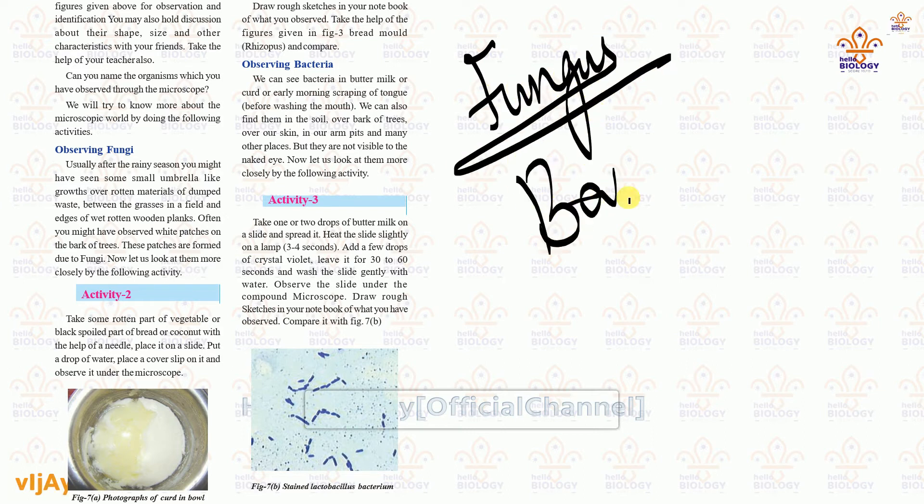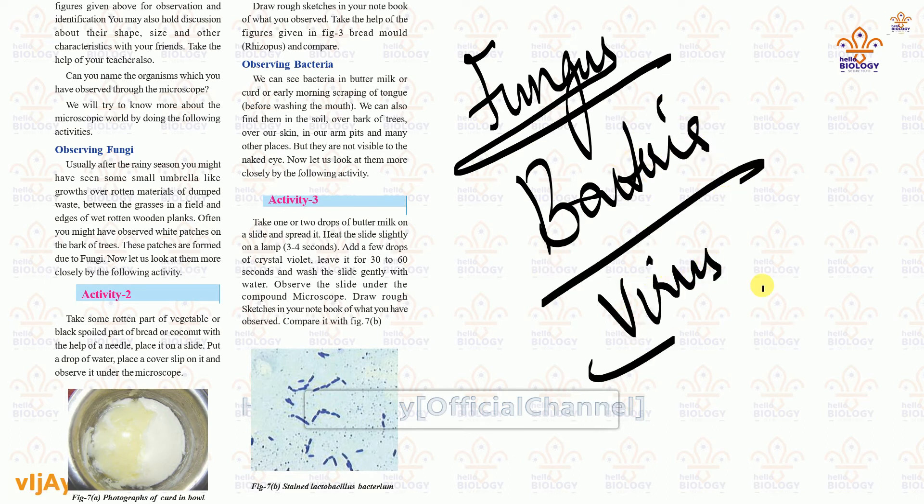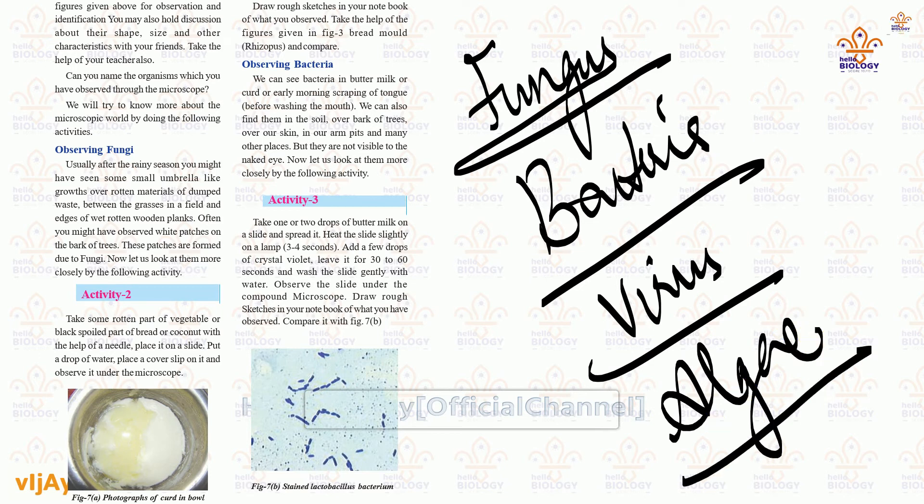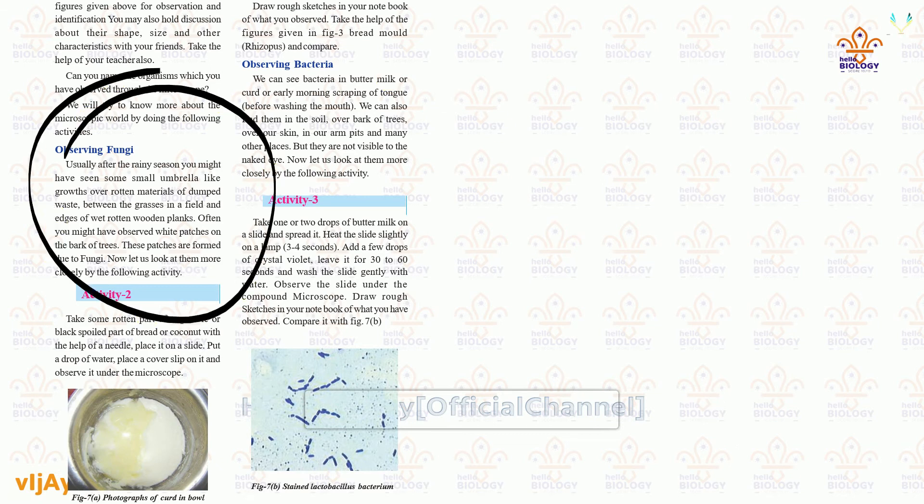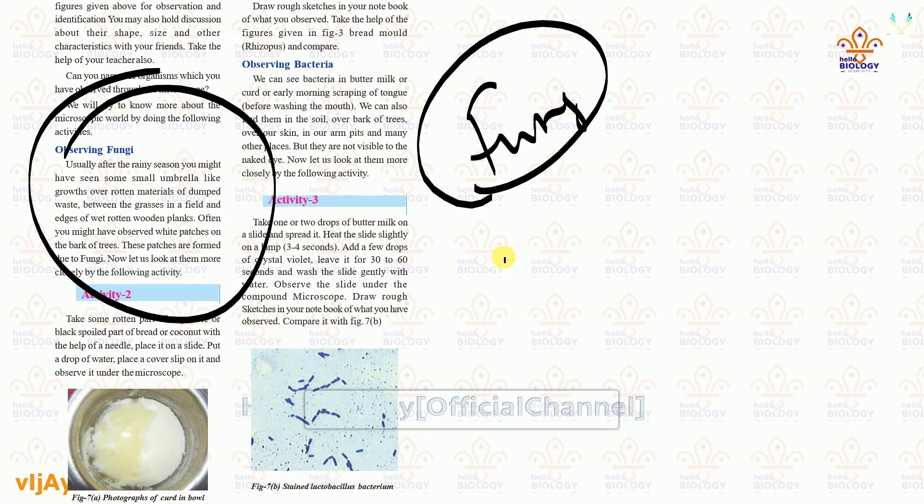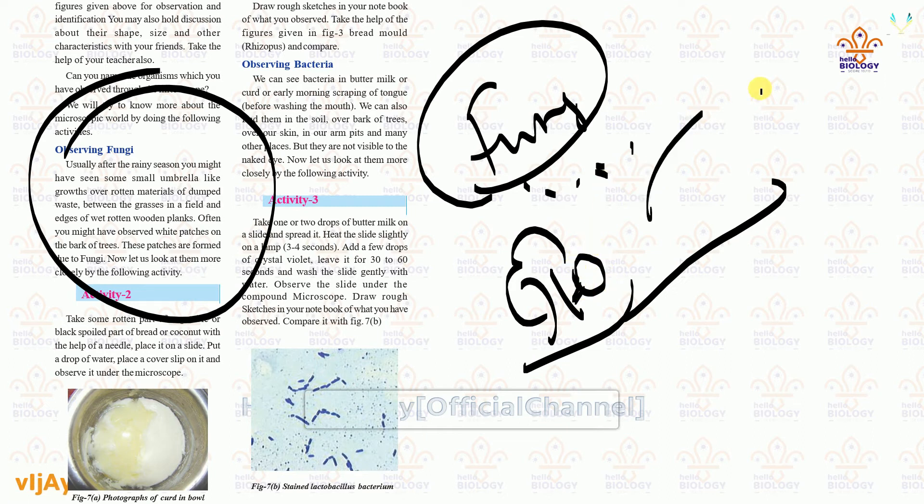Types are there - fungus, bacteria, virus, algae material. This kind of microorganisms are there. In this eighth class, we will be having each and every activity for fungus. What is the activity here? Whenever you see rainy season, near the trees you will be seeing some mushroom-shaped things, umbrella-shaped things.